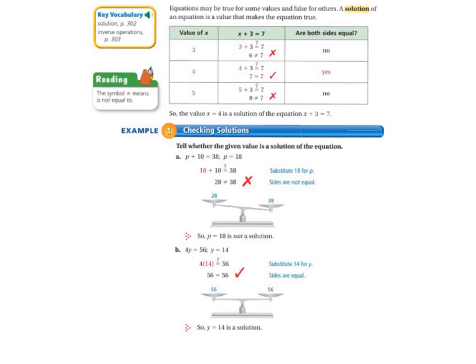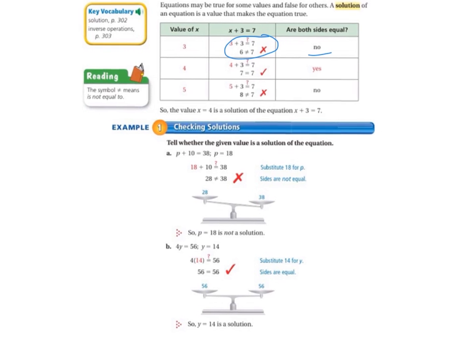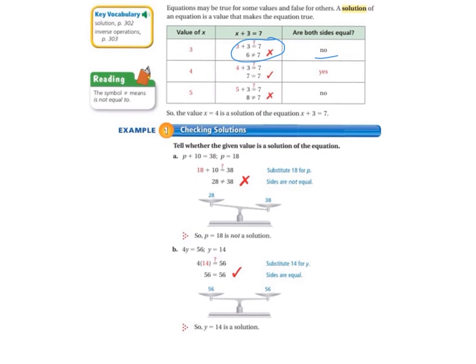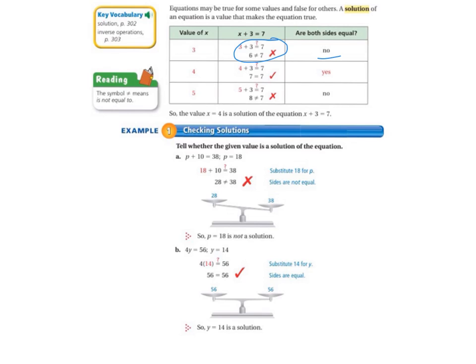So if we look at the first row of the table, if the value of x is 3, then 3 plus 3 only equals 6, not 7. So both sides are not equal. So that means that 3 cannot be a solution for that equation. If we look at 4, 4 plus 3 equals 7. So that means that 4 makes both sides equal. So 4 is a solution for the equation.